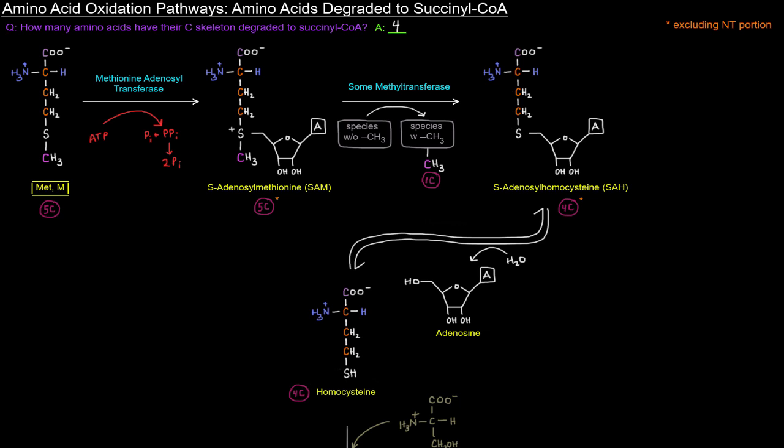And that species will then have that methyl group. And so the other four carbons are going to be here part of homocysteine or S-adenosyl homocysteine. And we're going to get that homocysteine by hydrolyzing off that adenosine using a hydrolase. And so that adenosine falls off and we get homocysteine.